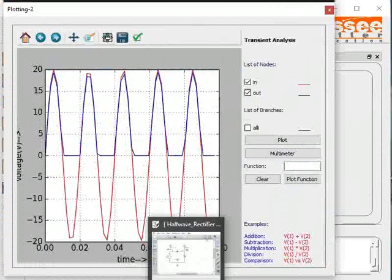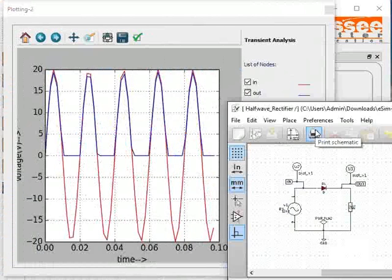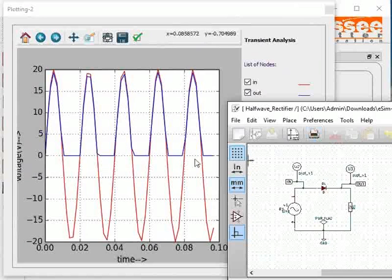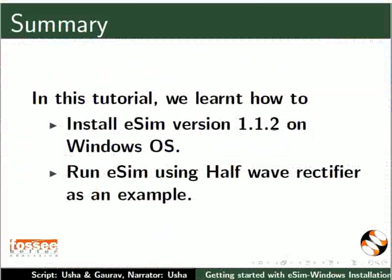Click on the minimized schematic window. You can now see the plot and the schematic together. This brings us to the end of this tutorial. In this tutorial, we learnt how to install eSIM version 1.1.2 on Windows OS, and run eSIM using half wave rectifier as an example.